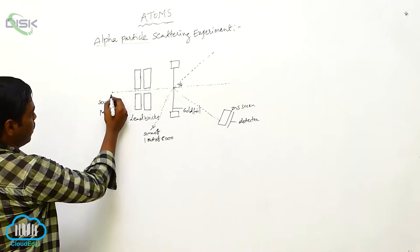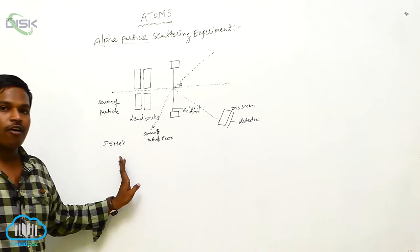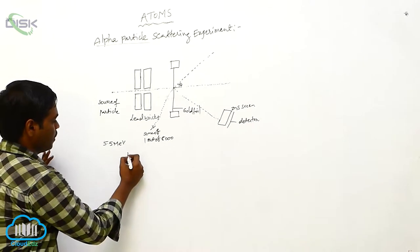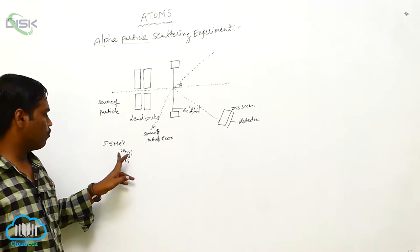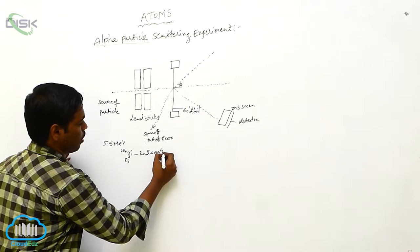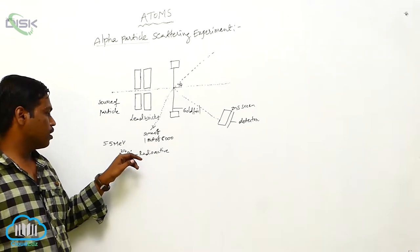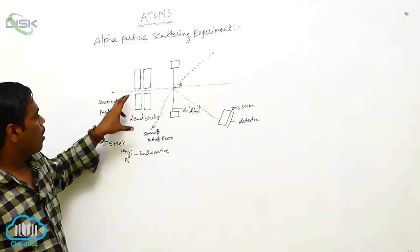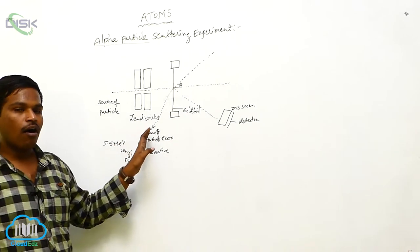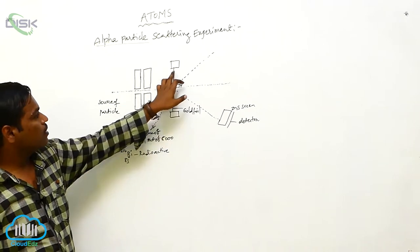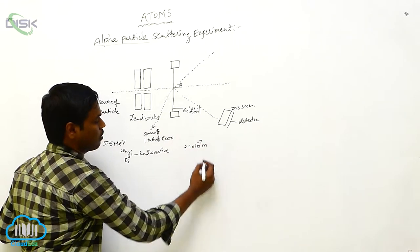Here we are taking 5.5 mega electron volt alpha particles coming from bismuth-83-214, a radioactive element. These alpha particles of 5.5 MeV pass through the lead bricks, so only the collimated fine beam is incident on the gold foil. This gold foil has a thickness of 2.1 × 10⁻⁷ meters.